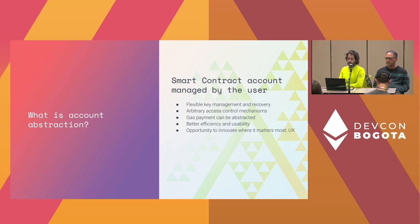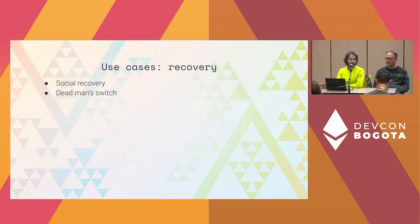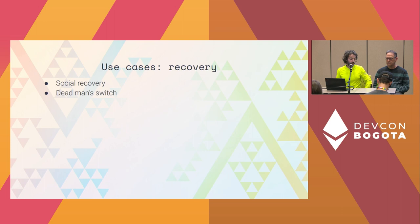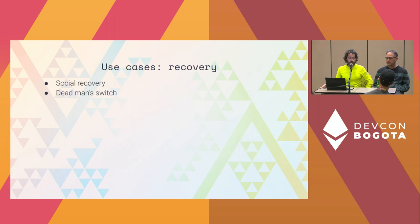What are the use cases? The one talked about since the beginning is social recovery. Let's say something bad happens to that secret you're trying both to not lose and not have stolen. Maybe you have some friends plugged into your account, and three out of five of them can help you restore your wallet. You can also add a delay mechanism — if your friends try to recover your wallet when you don't need recovery, you as the account owner would see that in advance, and the operation wouldn't happen immediately. You'd have maybe a week to respond.